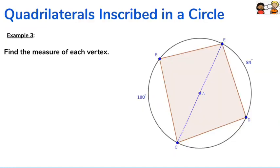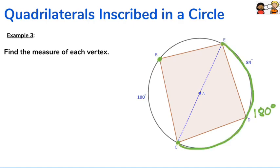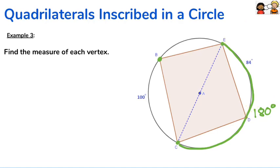Let's look at some examples. We are trying to find the measurement of each vertex: B, E, D, and C. Let's start with angle B. We know that arc EDC is a semicircle, and line EC is a diameter going through the center of the circle. The inscribed angle whose endpoints are on that semicircle is half of 180, so angle B is 90 degrees.